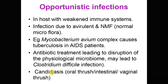Another example of opportunistic infection is candidiasis — overgrowth of the yeast Candida. Candida is present as normal microflora in the mouth, intestine, and vagina. But when its numbers grow in large amounts, that is called thrush — oral thrush in the mouth, intestinal thrush, and vaginal thrush in the vagina.